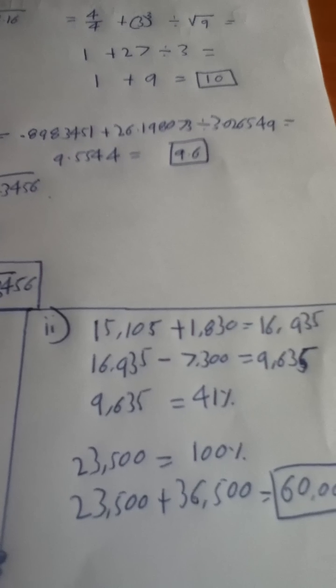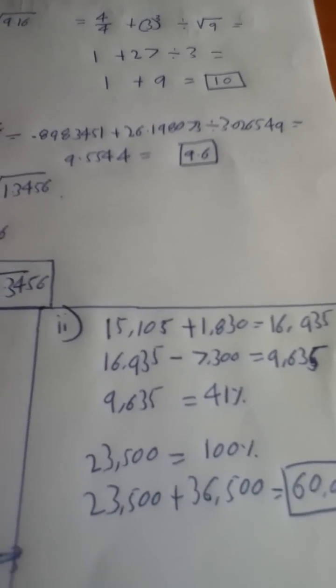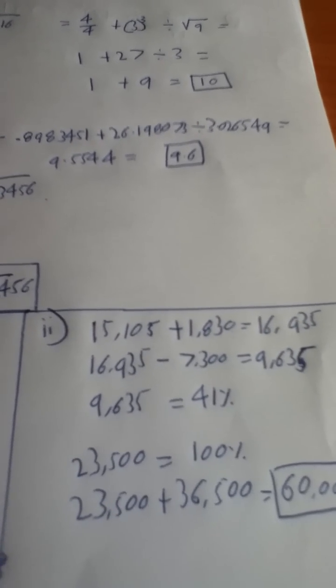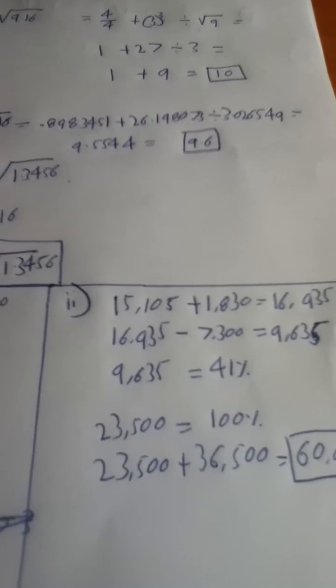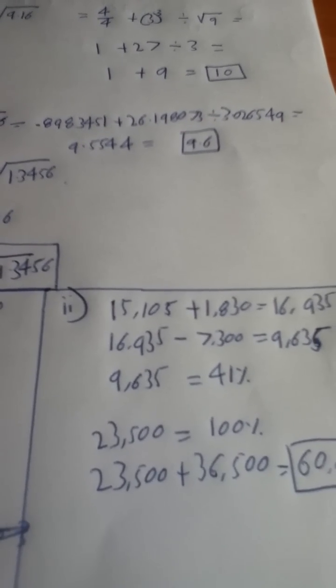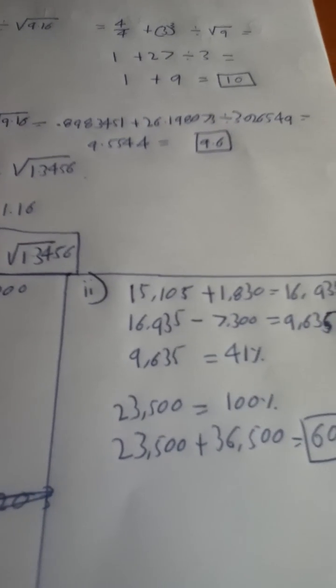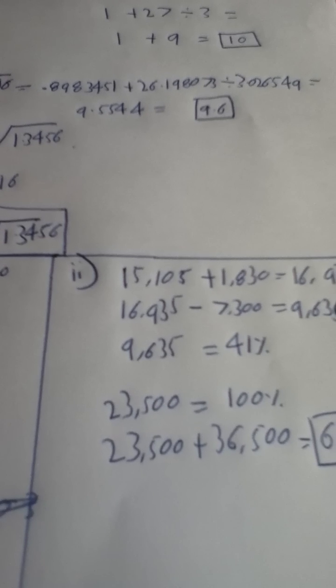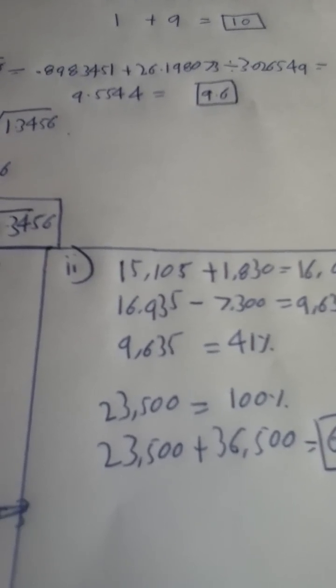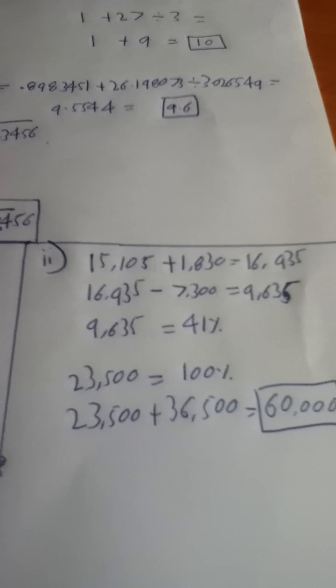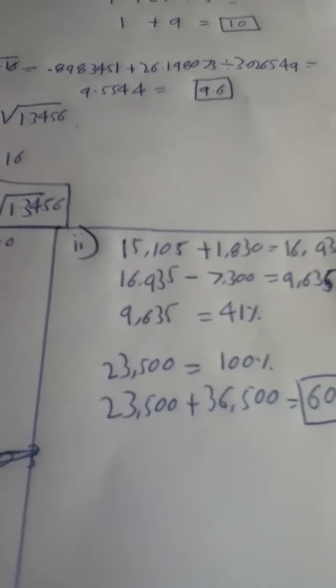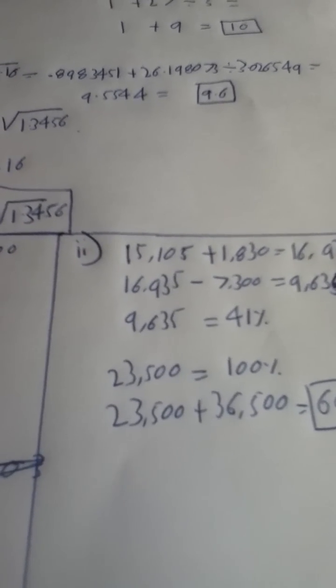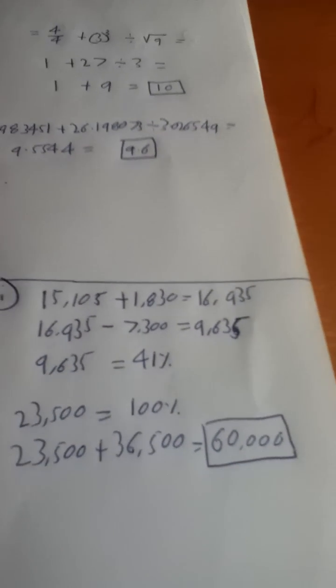If you take the lower tax rate of 7,300 away from this you get 9,635, which means she pays 9,635 euro at the higher rate of tax which is 41%. That means 100% would be 23,500. So if you add 23,500 and 36,500 you get a new gross income of 60,000 euros.